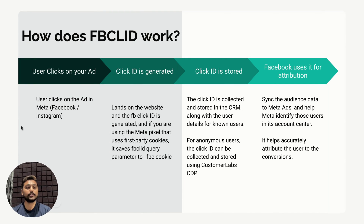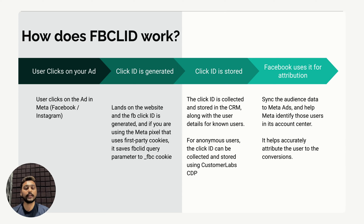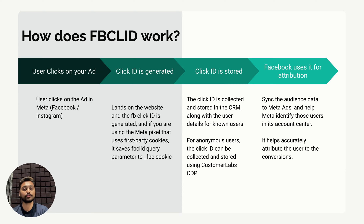Here's how the Facebook click ID works: first, a user clicks on your Facebook ad, then lands on your website. As soon as the user lands, the click ID is generated and appended to the URL as a query parameter in the format fbclid equals. It is also saved in the FBC cookie if you're using first-party cookies with Meta Pixel. You can then collect it and store it in your CRM along with user details for known users. For anonymous users, use a tool like CustomerLabs to collect and store the click ID for both anonymous and known users.